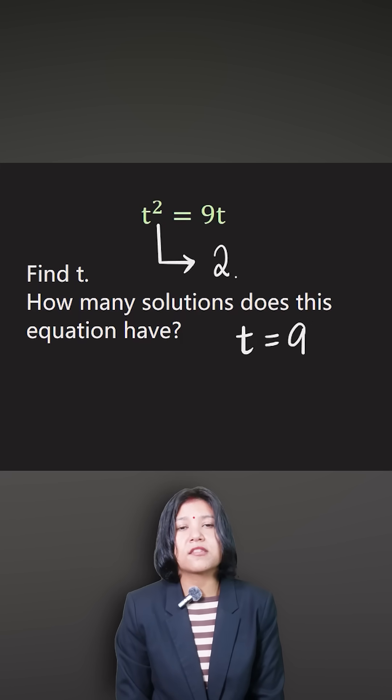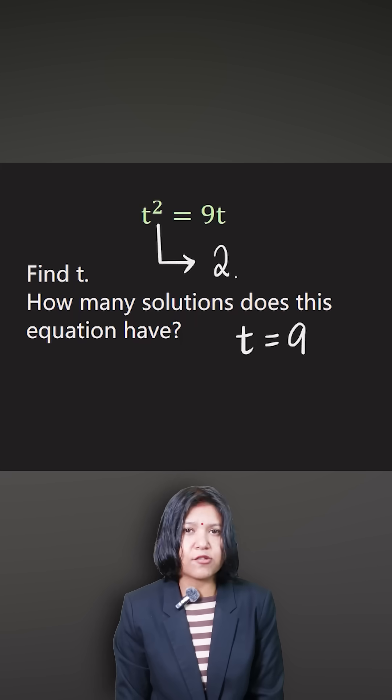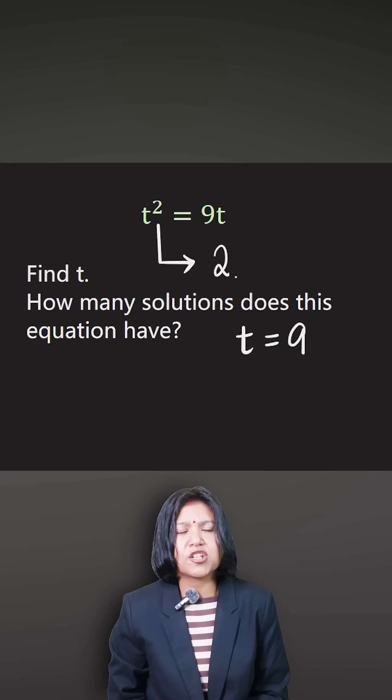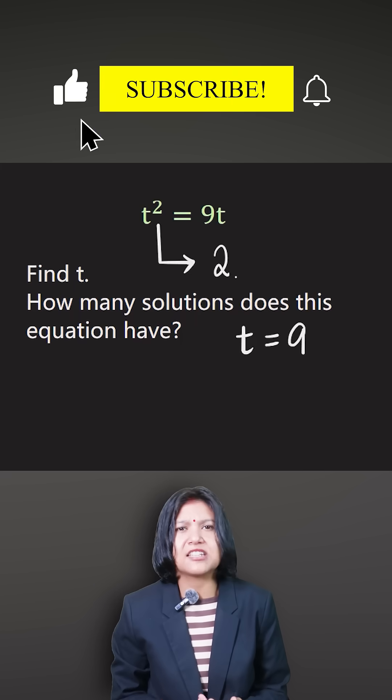Why? Because you don't know that the given variable can be zero or something else. So what you're doing by cancelling out t from both sides is saying that t cannot be zero.